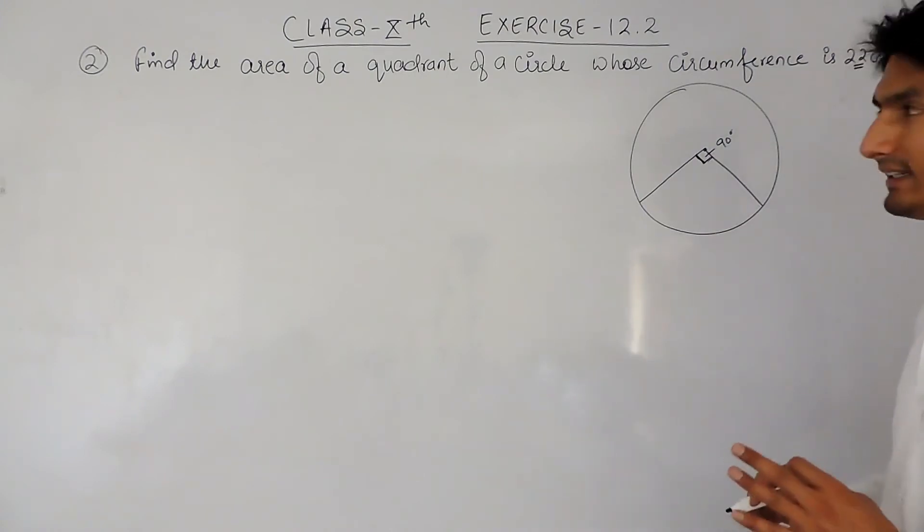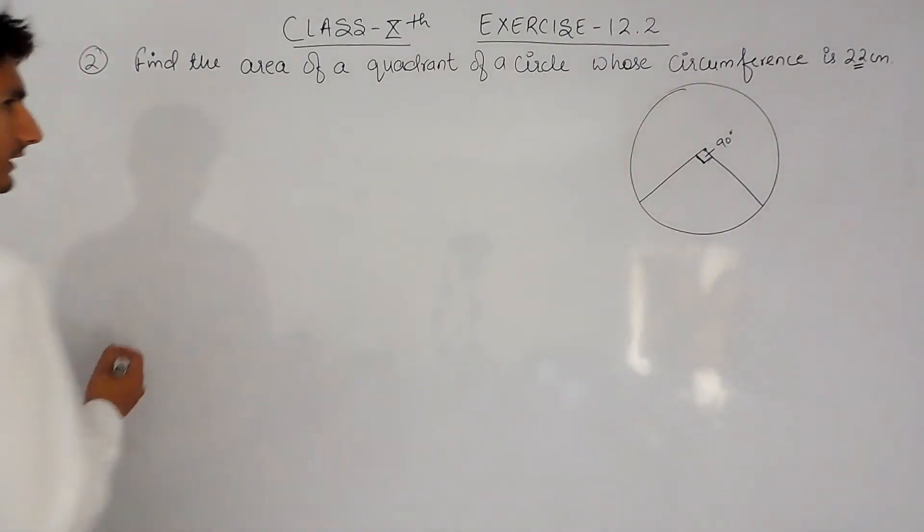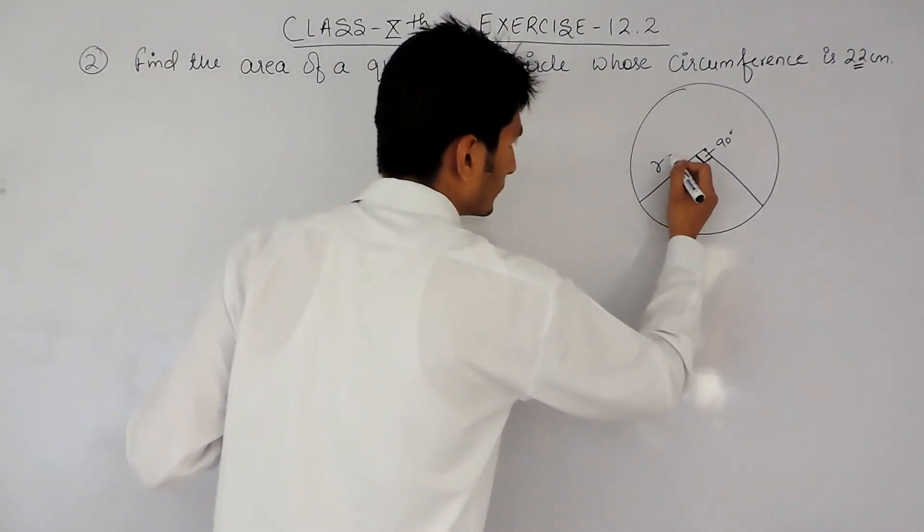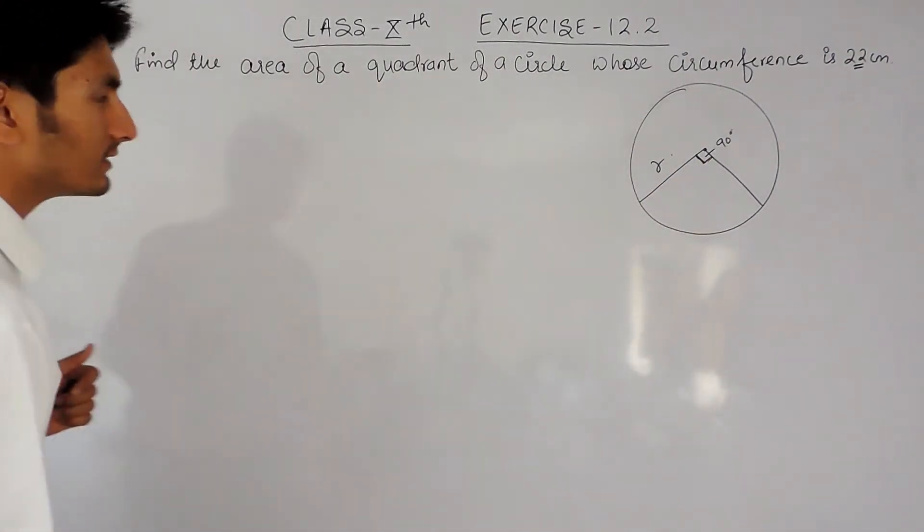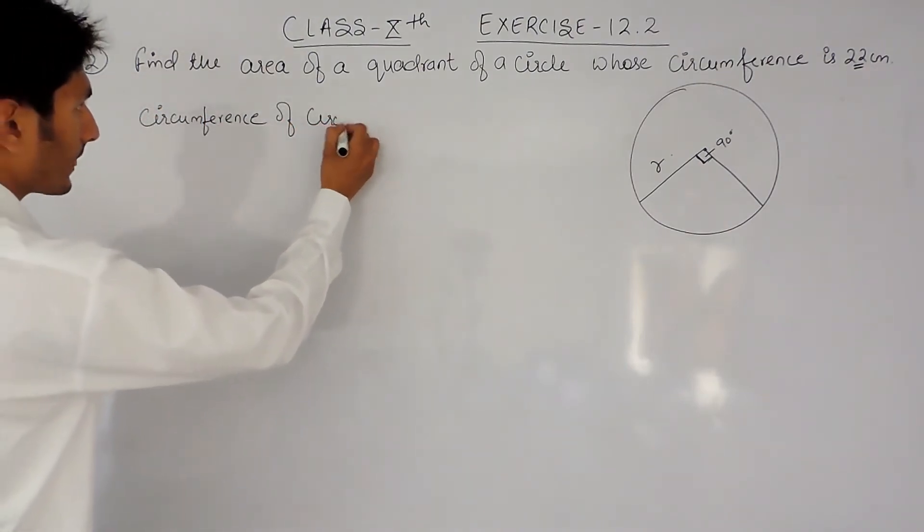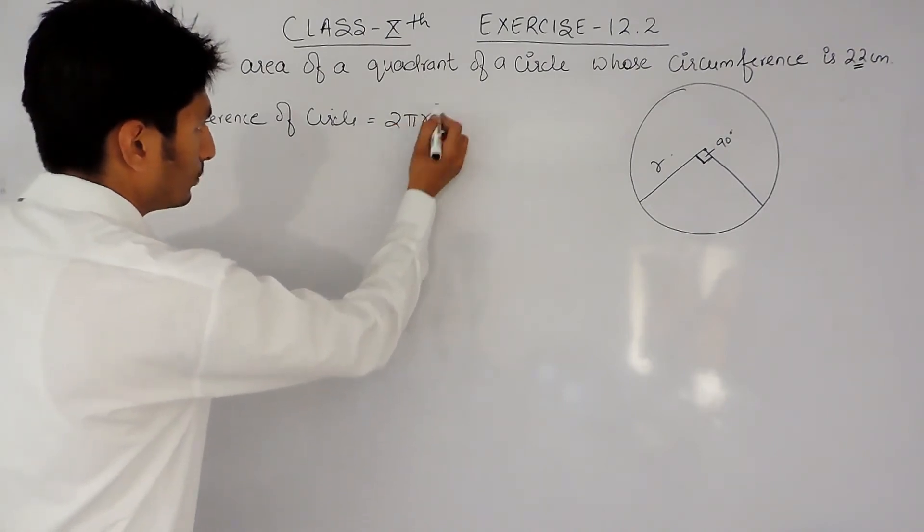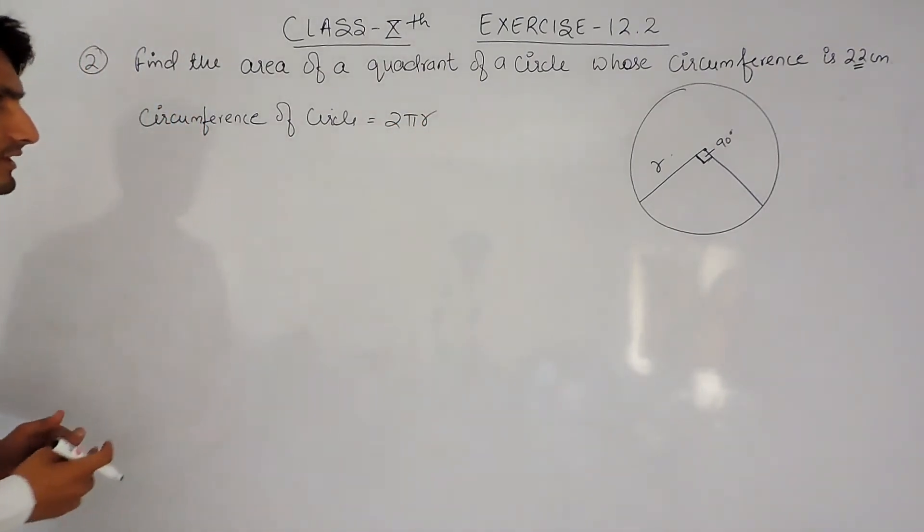Now first of all, suppose the radius for this circle is r centimeters. So the circumference of a circle equals 2πr. The formula to find out the circumference of a circle is 2πr.